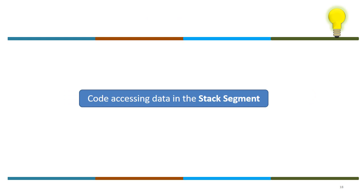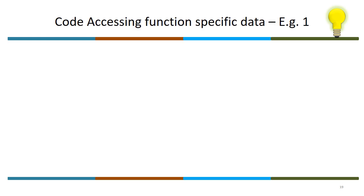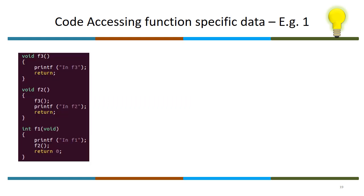Next, code accessing data in the stack segment. The allocation of memory for every stack frame — or for every function-specific symbol — is dynamic. The function-specific data is fixed, but the allocation is dynamic. This is where a challenge is posed to the compiler.